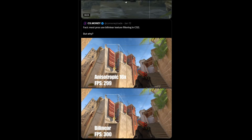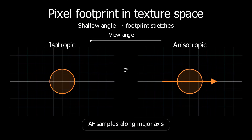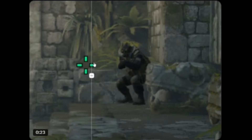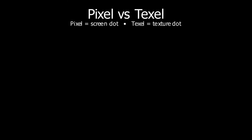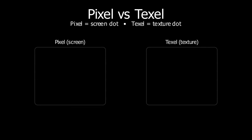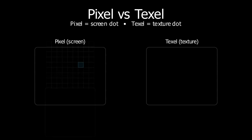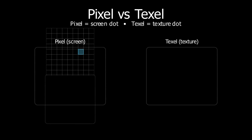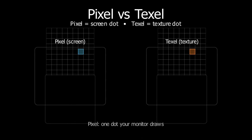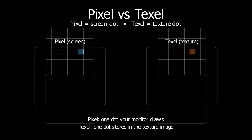Let's explain this properly, but in very simple words. Textures in-game, especially in Counter-Strike, are stored as images made up of tiny units called texels. A pixel is a dot on your screen; a texel is a dot inside a texture file.